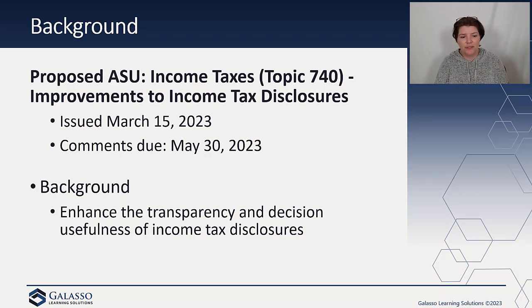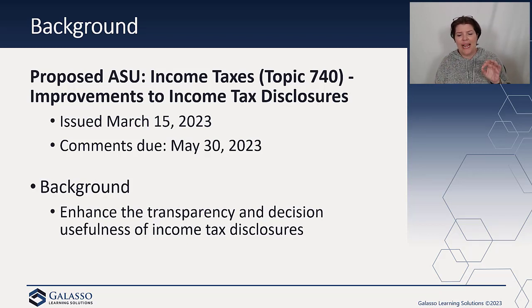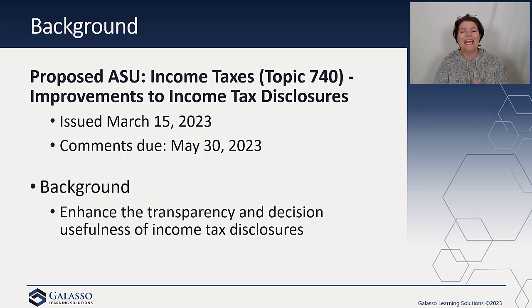This was proposed on March 15th and comments are due May 30th. The goal is to provide a little bit more transparency. Investors, lenders, and creditors have indicated they really need to better understand where this income tax line item is coming from. There's not currently a requirement to disaggregate, and they don't understand the related tax risks and tax planning that is happening, so they want a better disaggregation.